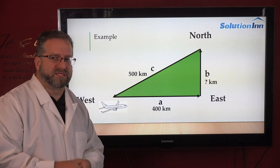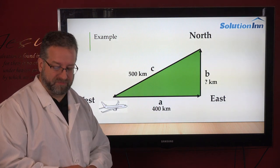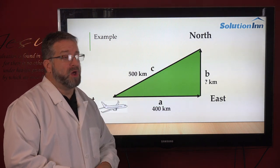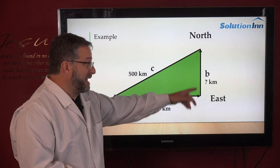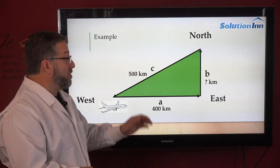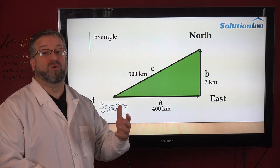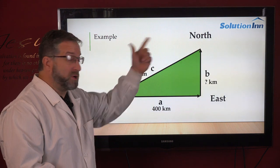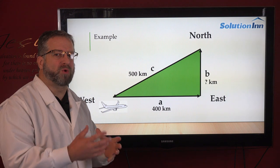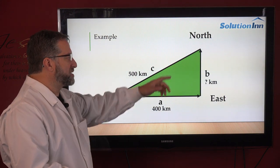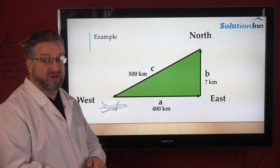We have an airplane. We're going to fly due east for 400 kilometers. When we get to our destination in the east, we turn at a 90 degree angle and head due north. We're unsure of how far we've traveled north. Once we reach that destination, we turn around and want to go back to our point of origin, heading southwest for 500 kilometers.